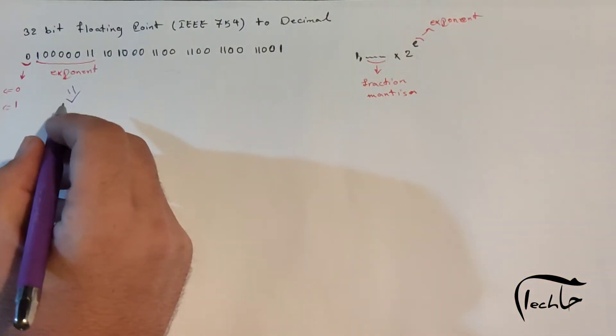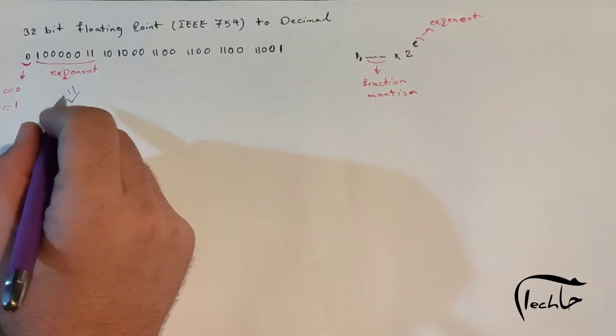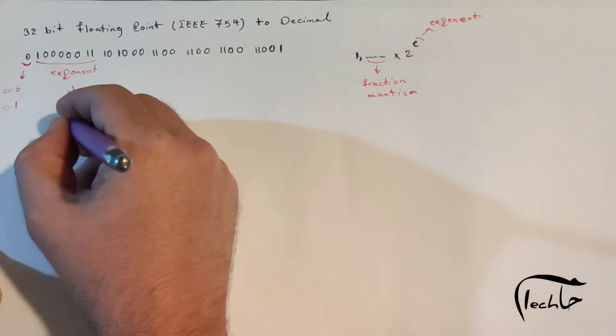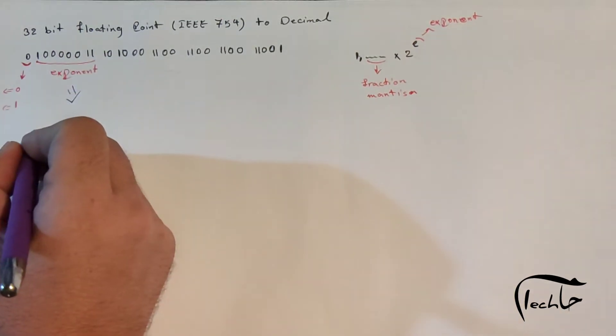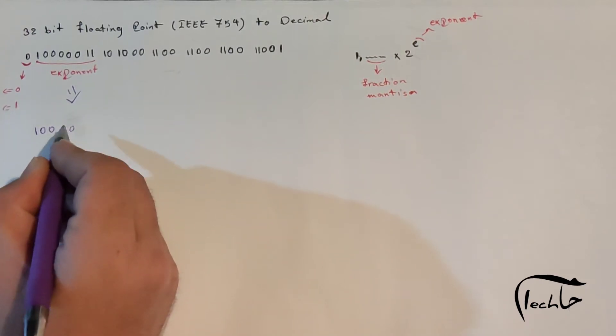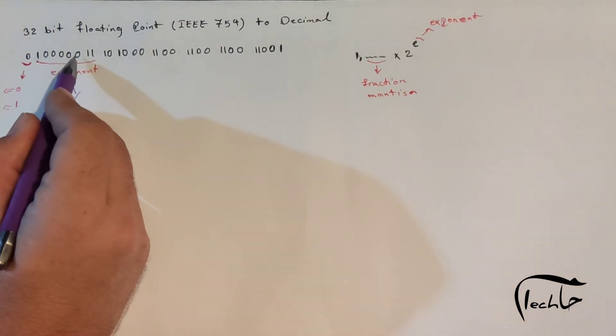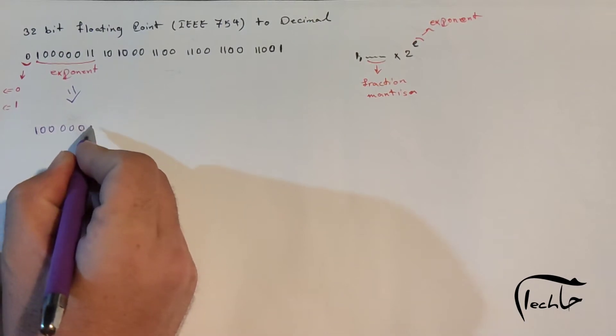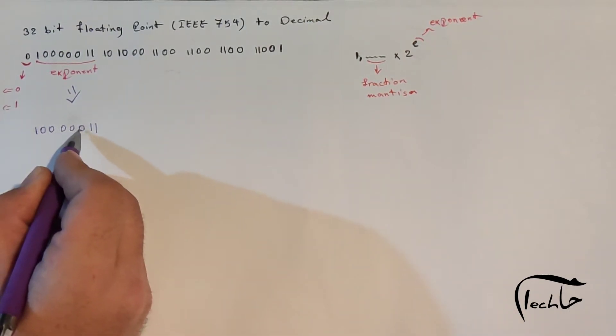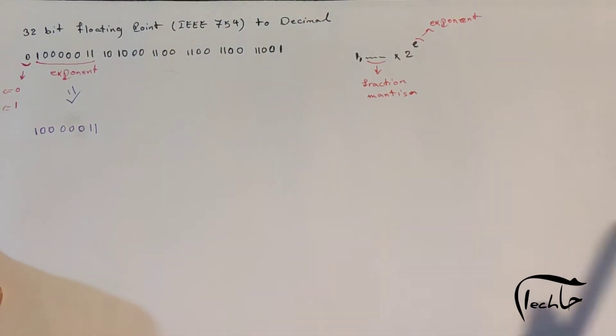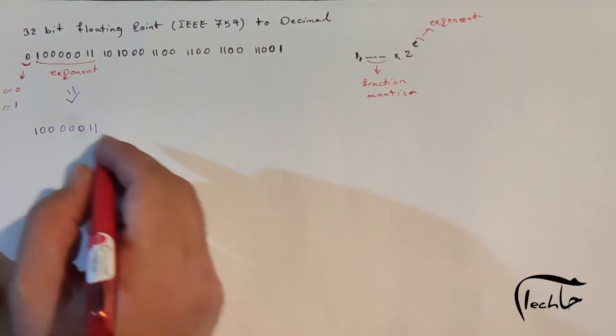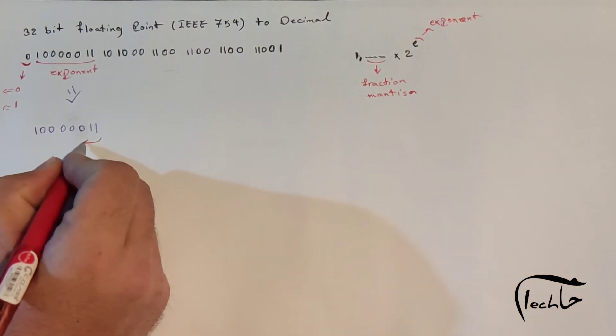So let's convert the exponent binary representation to its decimal equivalent. I write this here: 1, 0, 0, 0, 0, 0, 1, 1. That's 1, 2, 3, 4, 5, 6, 7, 8. Okay, I use from the right.